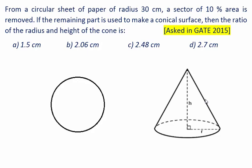Hello students, this is Pawan Jaiswal. Today we are going to see a GATE question of 2015 which was asked in Mechanical. In this question, a circular sheet of paper is taken having a radius of 30 centimeters. From this sheet, 10% of the area is removed and the remaining part is used for making a cone. We have to find the ratio of the radius and height. Four options have been given, so let's try to solve this question.